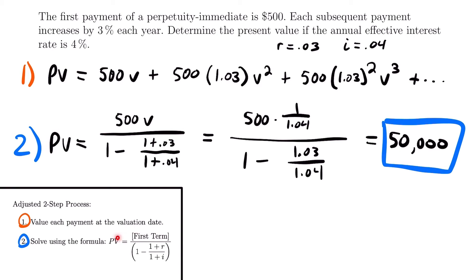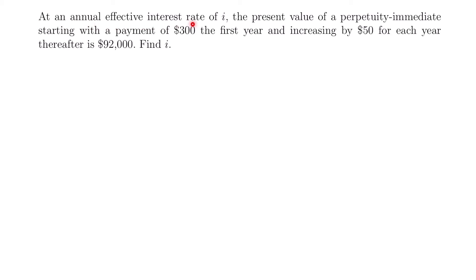That present value formula makes the process much quicker and easier. For our last example: at an annual effective interest rate of i, the present value of a perpetuity immediate starting with a payment of $300 the first year and increasing by $50 each year thereafter is $92,000. Find i. The payments increase by $50 — a set amount — so this is an arithmetic perpetuity, not geometric.